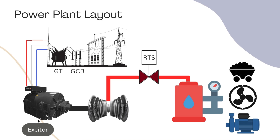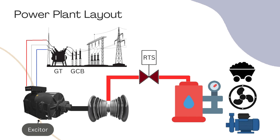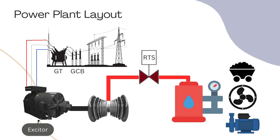Power is generated in the generator. To achieve this, we rotate the rotor and need flux inside the generator. The rotor is rotated by the turbine, and to produce flux we need an excitation system. When electricity is produced, we send it to the grid. However, the generated voltage is not high enough to transmit power to the remote end user, so we step up the voltage using a transformer called the Generator Transformer (GT).